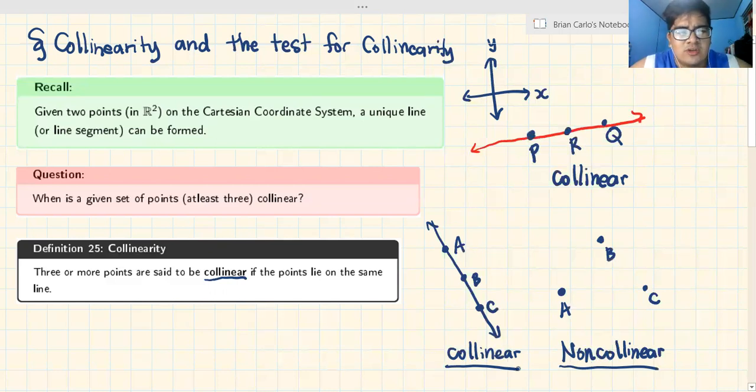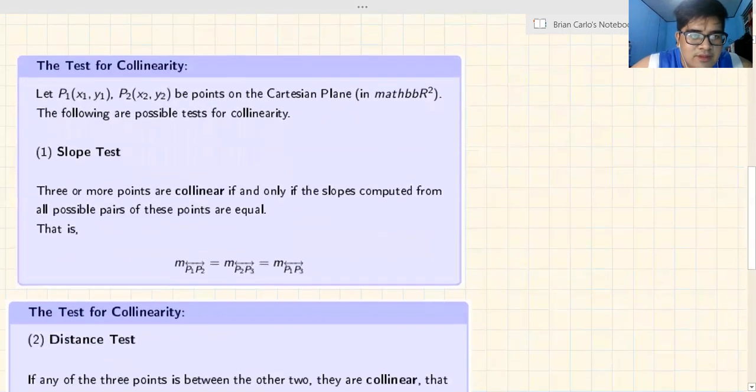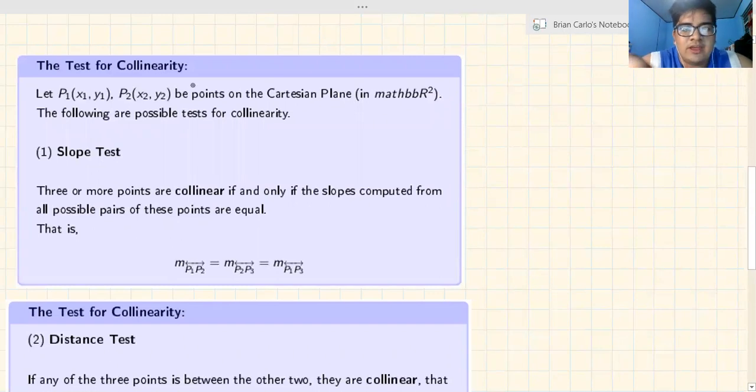Now, let's go back to the question. When is a given set of points, at least three, collinear? Is there a way to determine if they're collinear without actually drawing them? That's the analytical question right now. There is what we call the test for collinearity. Let's dive right into it.